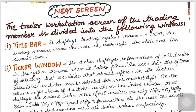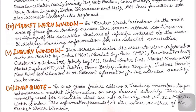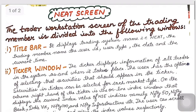Hey everyone, I'm back with my new video. Today's topic is NEAT screen. In the trading member's workstation, there are many windows that appear: title bar, ticker window, toolbar, market watch window, inquiry window, snap quote, order trade window, and message window. Let me explain each of them one by one.